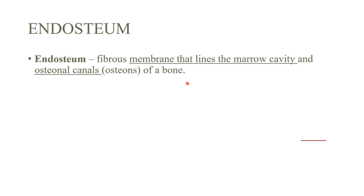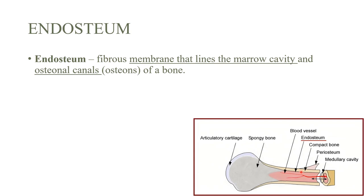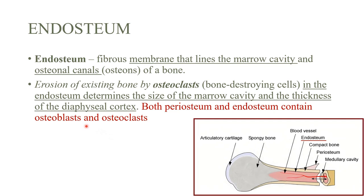This shows where the endosteum is — lining the marrow cavity. As extra information: the erosion of existing bone is done by osteoclasts, which are cells that break down bone that is no longer useful, rather than creating new bone.